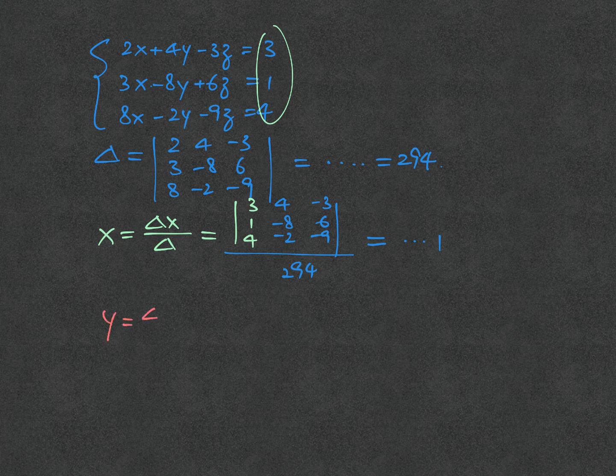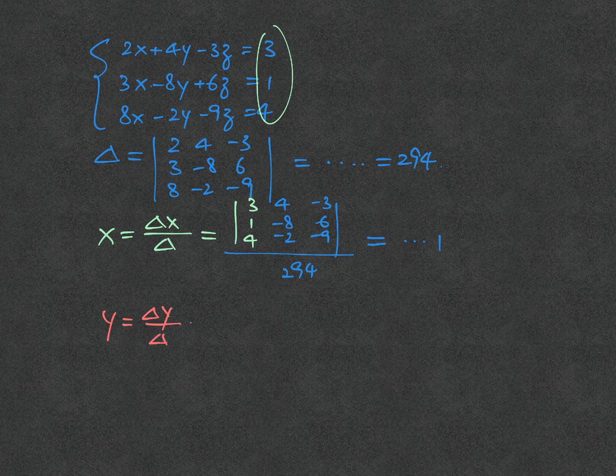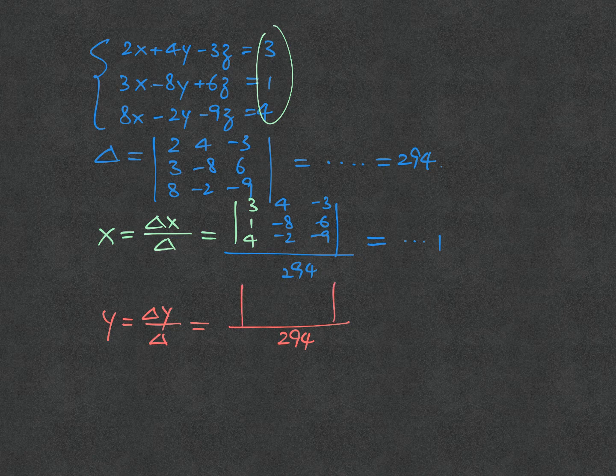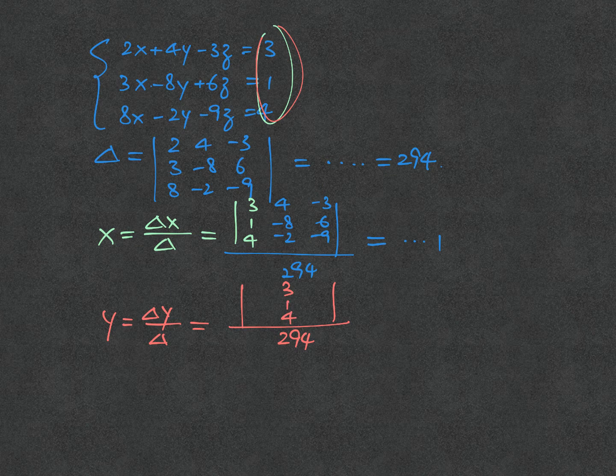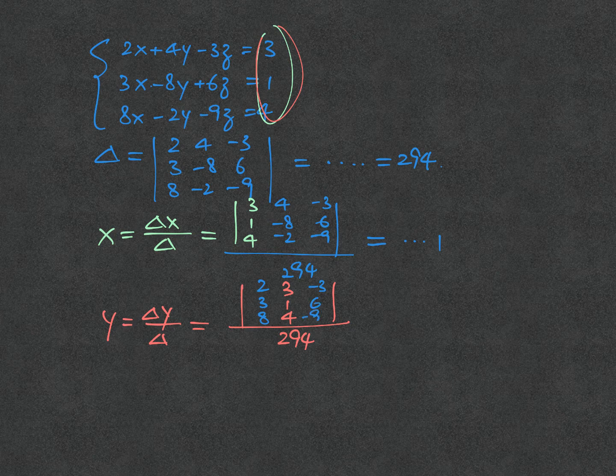For y, let's continue. Again, 294 goes in the denominator. Delta y means the column y is changed to 3, 1, 4, whereas the other numbers copy from the coefficients: 2, 3, 8, and minus 3, 6, minus 9, respectively.